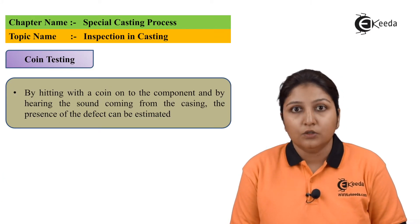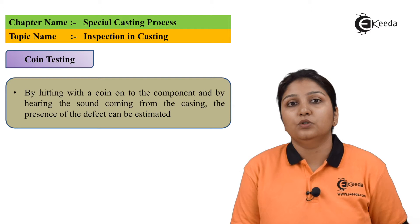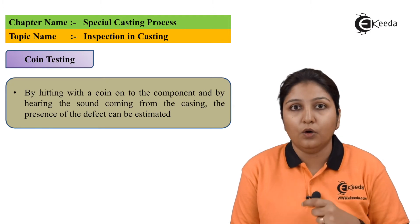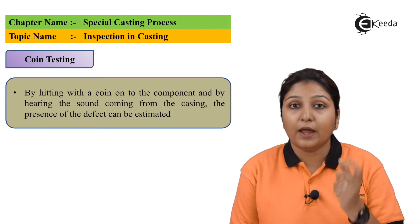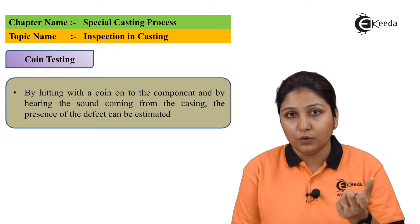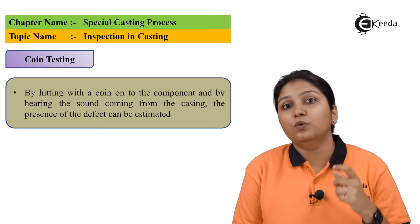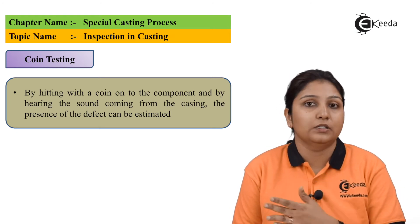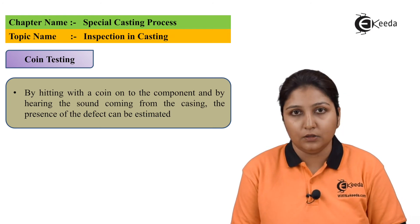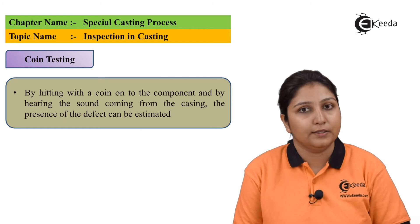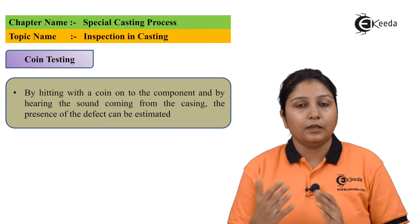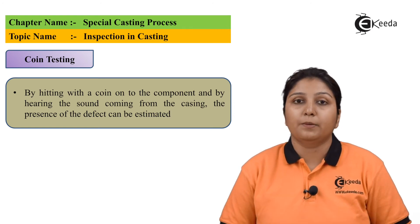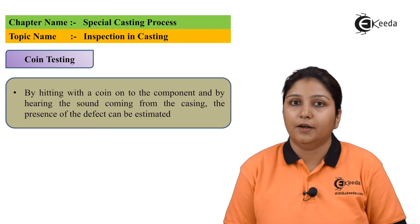The last method is coin testing. You hit the casting with a coin and listen to the sound it produces. If the sound differs across different areas or materials, the inspection is done based on those sound variations. Thank you for watching this video — stay tuned with Ikeda and do subscribe to our channel.